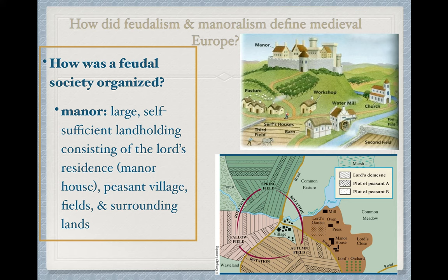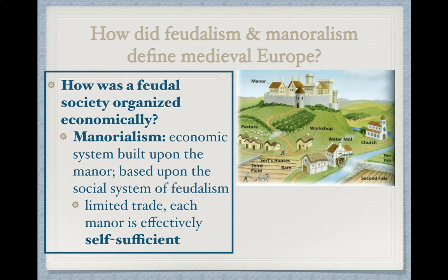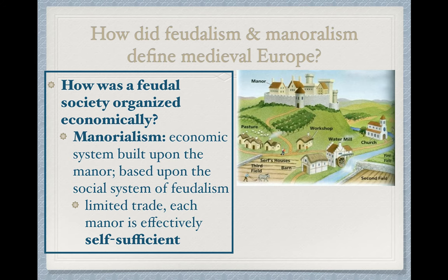There was the peasant village, the fields, the surrounding lands, the church — the manor is this entire widespread territory. Manorialism is the economic system — the ISM implies some sort of system or process. Feudalism is the system of exchanging land for military service; manorialism is the economic system that complements it. The social system is feudalism; the economic system is manorialism, where a lord oversees lesser nobles and ultimately serfs, with everyone sharing mutual roles and responsibilities to keep the manor functioning.